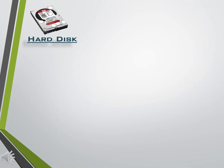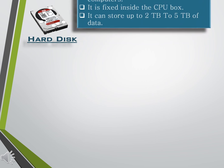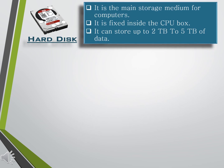Hard Disk: It is the main storage medium for computers, which is fixed inside the CPU box. It can hold a large amount of data, up to 2 TB to 5 TB. Data is recorded on both sides of the disk. Nowadays, portable hard disks are also available.